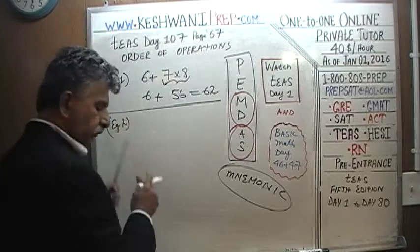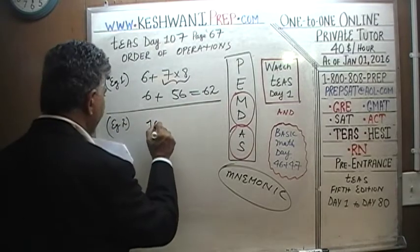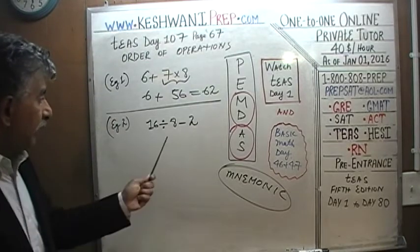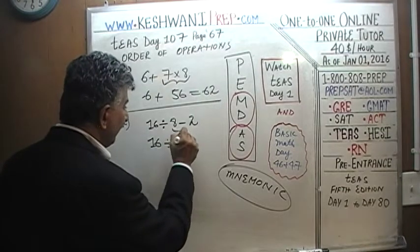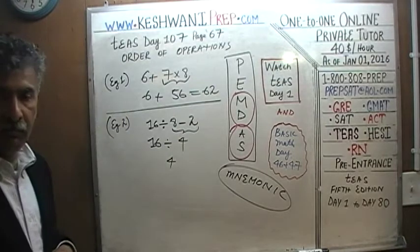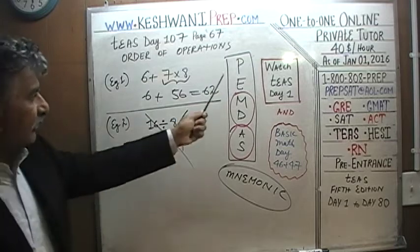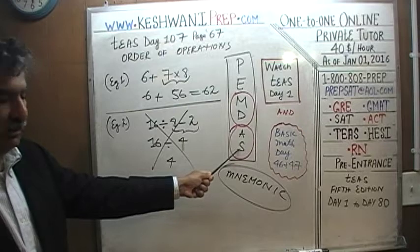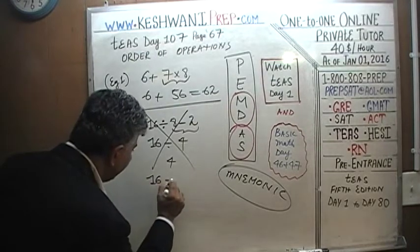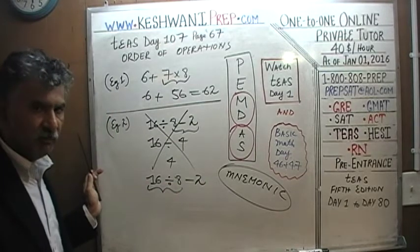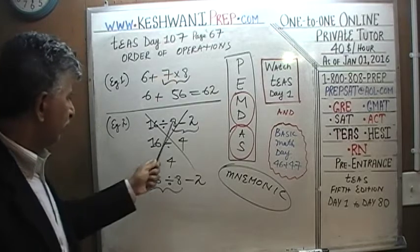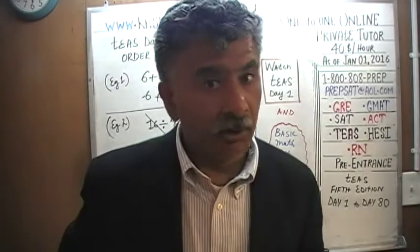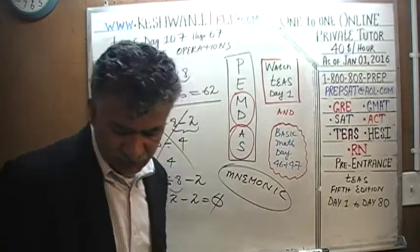Number two: 16 divided by 8 minus 2. If we incorrectly do the subtraction first, 8 minus 2 is 6, and 16 divided by 6 gives us the wrong answer. The rules tell us to do division before subtraction. Doing it correctly: 16 divided by 8 is 2, and 2 minus 2 gives us zero. The correct answer is zero.